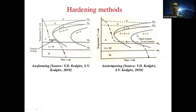In the lower bainite temperature region, the temperature remains constant before the martensitic start temperature — this is called austempering. Then the material is cooled to room temperature, and we obtain the desired properties of the material in the martensitic phase.